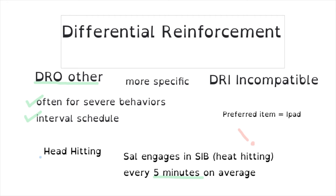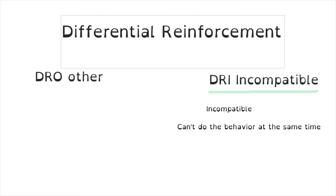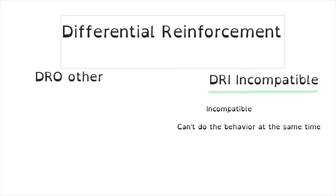DRI is differential reinforcement of incompatible behaviors. This schedule is specific for problem behaviors, and you want to identify one behavior that you can't do at the same time — it's incompatible. For example, it's impossible for a child to pick their nose and put their hands in pockets at the same time, so we would reinforce hands in pockets if nose picking is the problem behavior. Similarly, if hitting others is the problem, we might encourage hands folded in lap when they have an urge to hit.